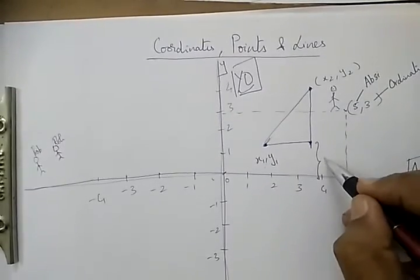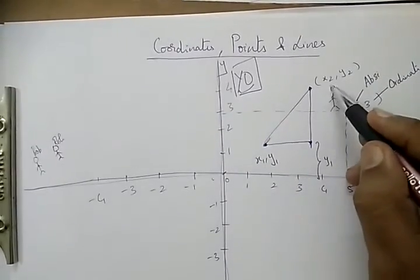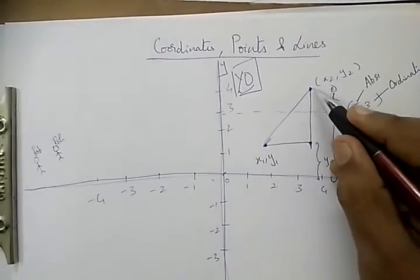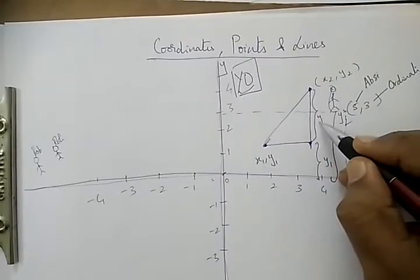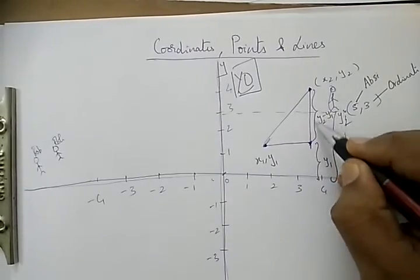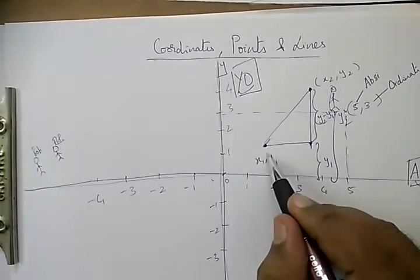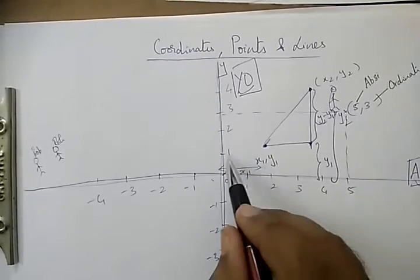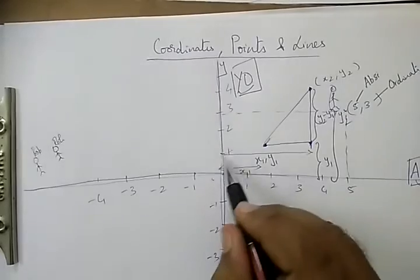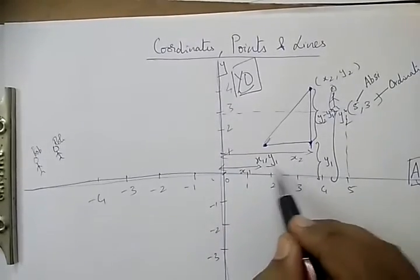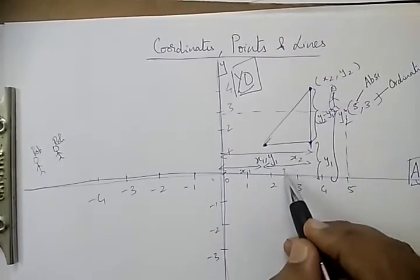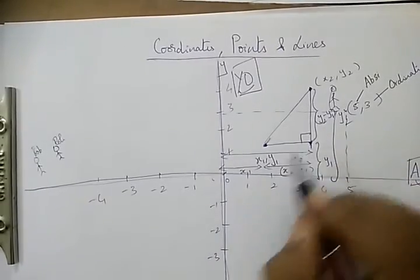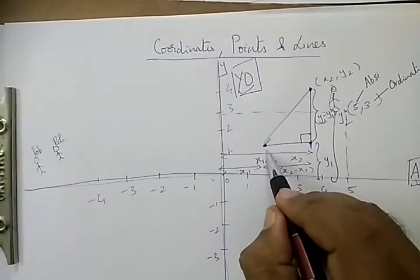We see that this distance would be y₁, and this whole would be y₂. So this particular length would be y₂ minus y₁. And this one - this is x₁, and from here to here would be x₂ - so this particular distance would be x₂ minus x₁.